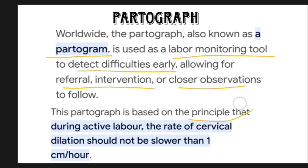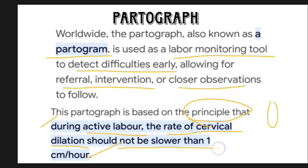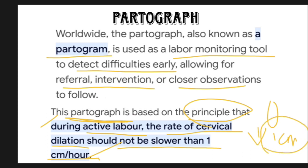The principle of the partogram: during active labor, the rate of cervical dilation should not be less than 1 cm per hour. That is the main principle. If it reduces to less than 1 cm per hour, then the delivery is going to be abnormal and it should undergo a C-section.